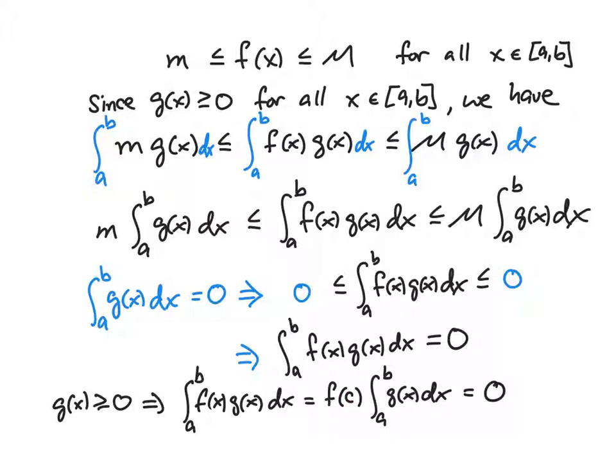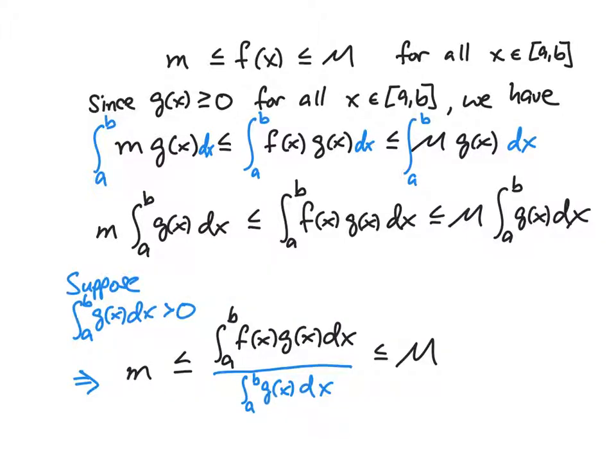Now let's suppose that the integral of g(x) over this interval is greater than zero. Then that means we could take this term here and divide everything by the integral of g(x). Since we're assuming that the integral of g(x) is greater than zero, we're not dividing by zero and we're not changing the direction of inequalities. You might say, what happens if g(x) is less than or equal to zero? No problem—the proof will still be the same, you're just going to change the direction of the inequalities. You'll still end up with the same proof.